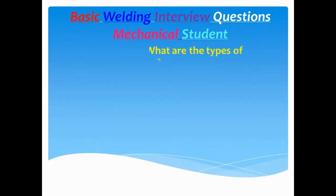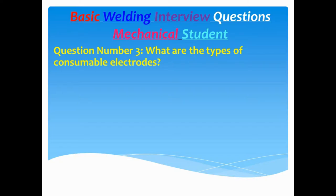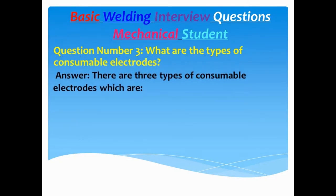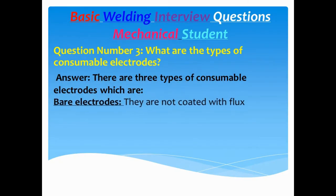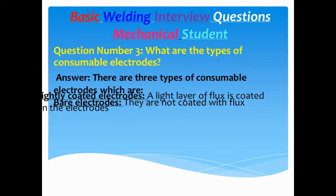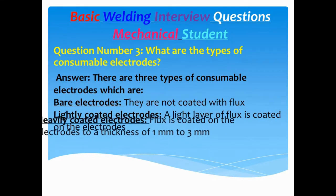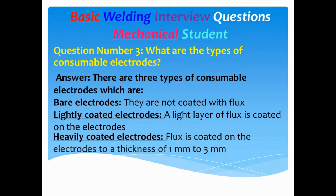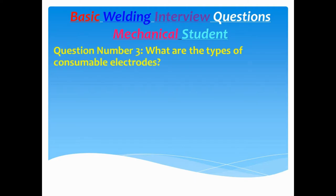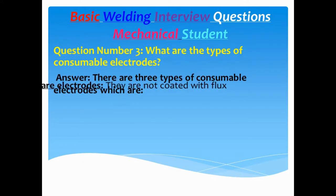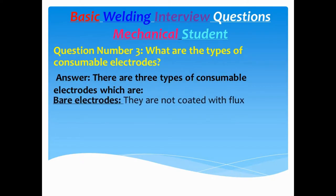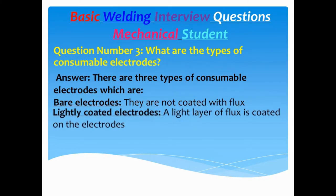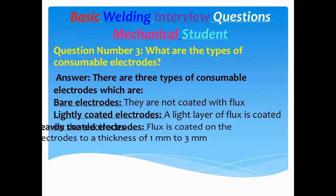Question number three: What are the types of consumable electrodes? Answer: There are three types of consumable electrodes. Bare electrodes: they are not coated with flux. Lightly coated electrodes: a light layer of flux is coated on the electrodes. Heavily coated electrodes: flux is coated on the electrodes to a thickness of one millimeter to three millimeters.